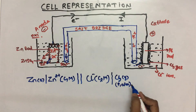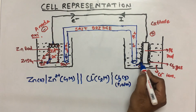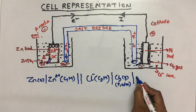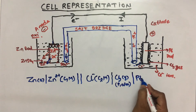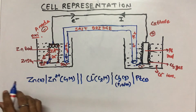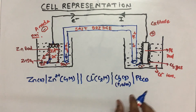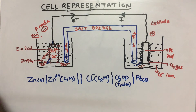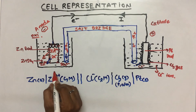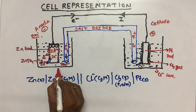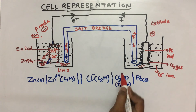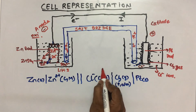Suppose the pressure is given. Then a little further from the chlorine gas you get platinum solid. So you represent the cell in this way — you started from the left-hand side and ended on the right-hand side.